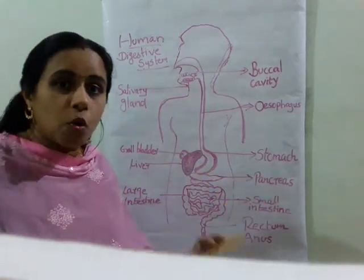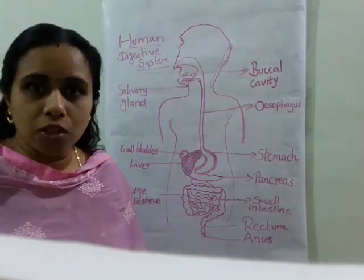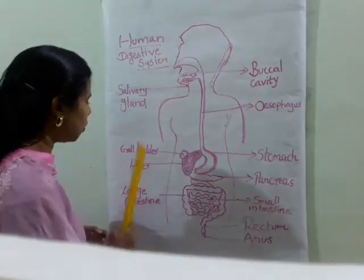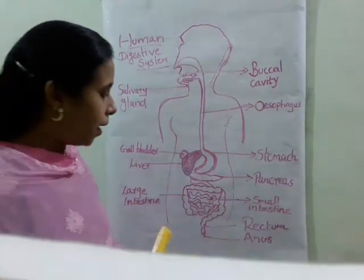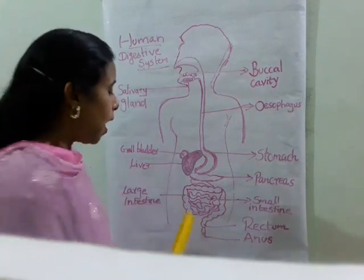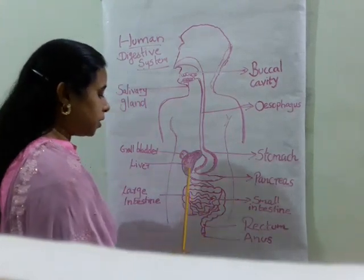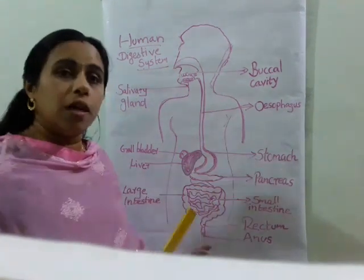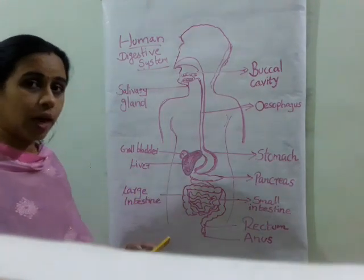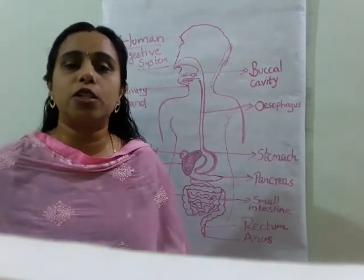In the small intestine, fat is digested — for example, when you are taking chicken, mutton, or egg. These fats should be digested in the small intestine with the help of bile juice. Complete digestion of carbohydrate, protein, and fat molecules takes place in the small intestine.